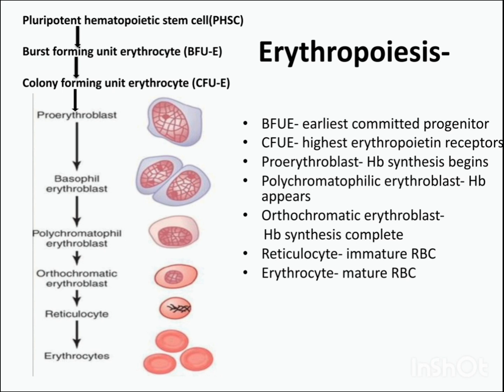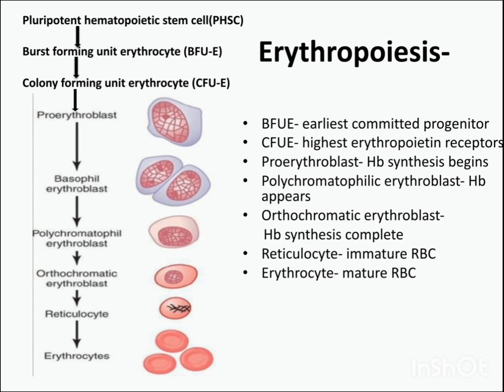From polychromatophilic erythroblast we get orthochromatic erythroblast, where hemoglobin synthesis is complete. Then we get reticulocytes, which are immature RBCs containing nuclear remnants. Finally we get erythrocytes, which are mature RBCs.